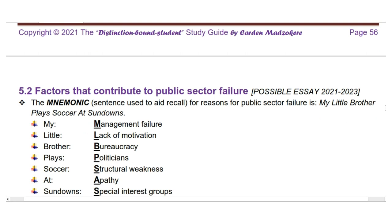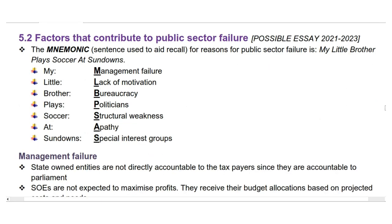Here are the factors that contribute to public sector failure. Cardin came up with the following sentence mnemonic to help you remember in the exam: 'My little brother plays soccer at Sundowns.' The M in 'my' stands for management failure. The L in 'little' stands for lack of motivation. The B in 'brother' stands for bureaucracy. The P in 'plays' stands for politicians. The S in 'soccer' stands for structural weakness. The A in 'at' stands for apathy. The S in 'Sundowns' stands for special interest groups.